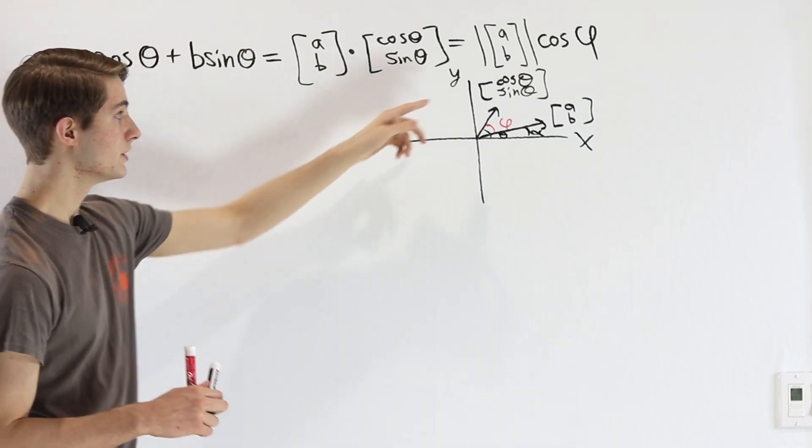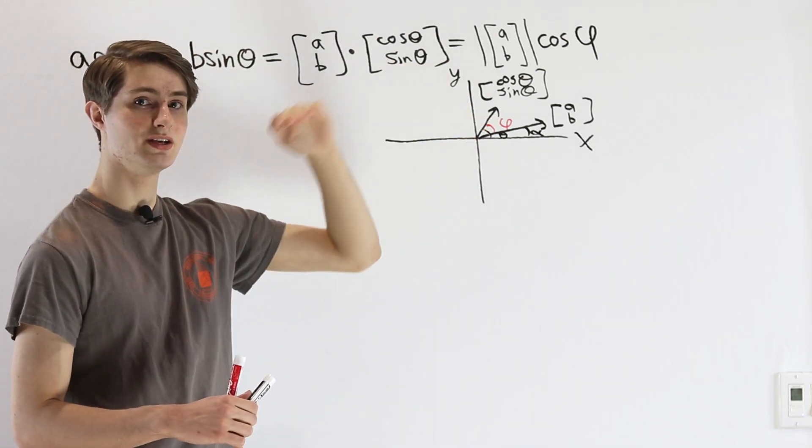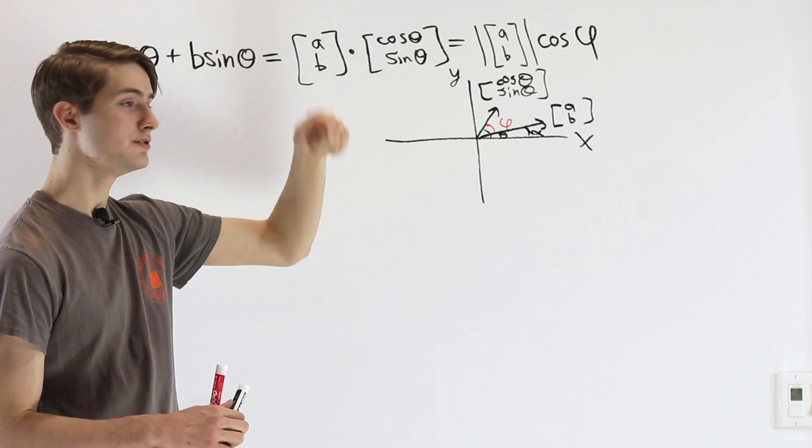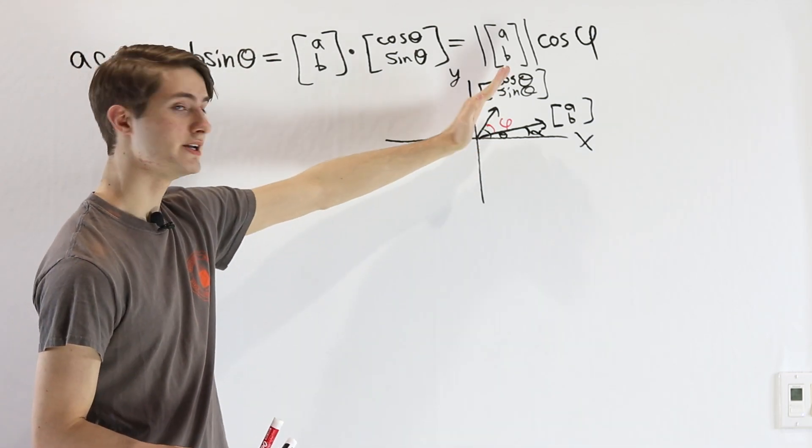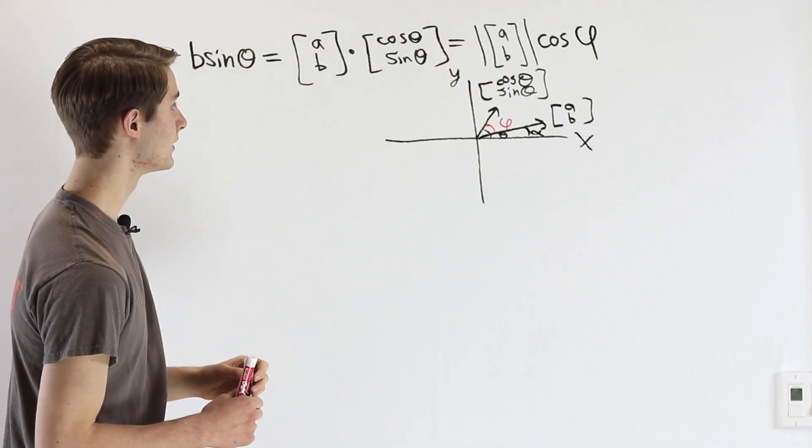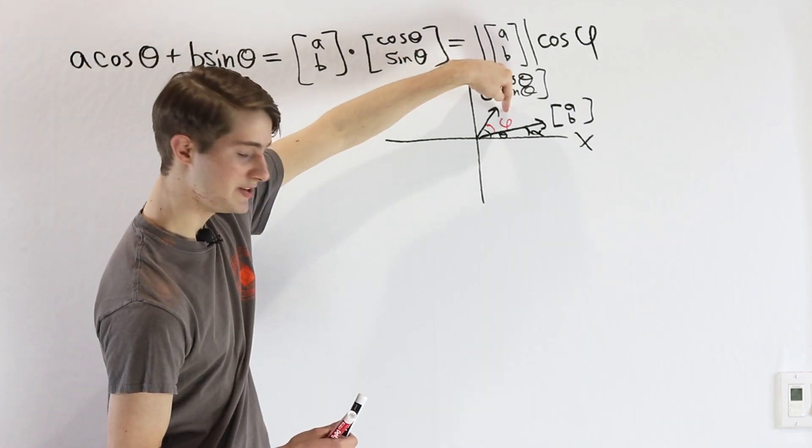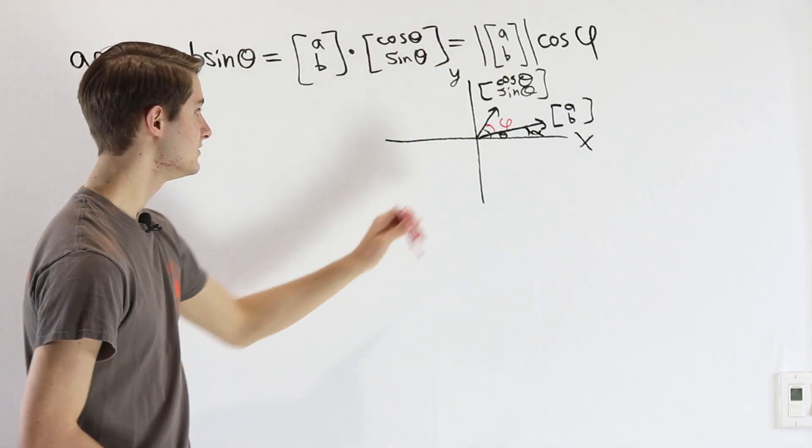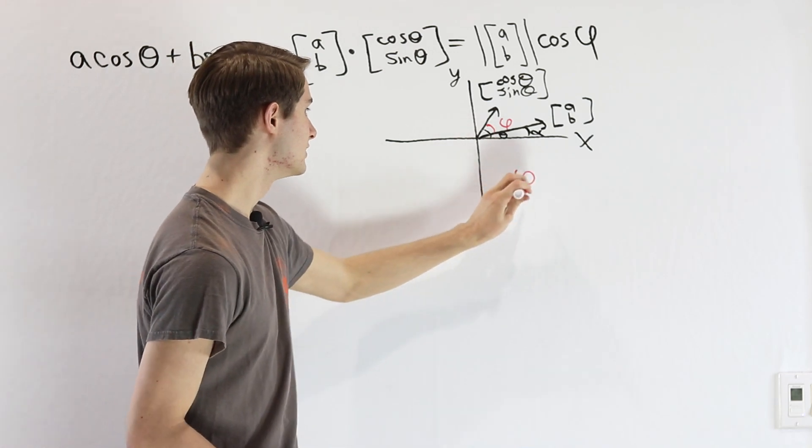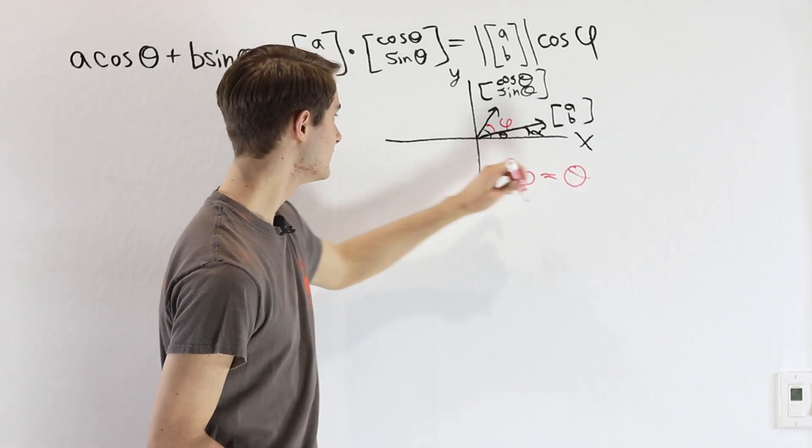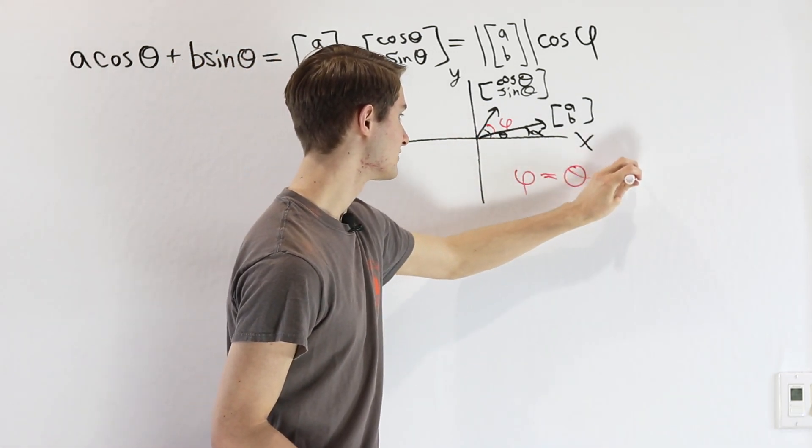Because remember, cos θ and sin θ give us the x and y values for a unit circle when we go angle θ up from the x-axis. Now if we're looking for this angle φ in here, all we have to do is take the difference of these two angles. φ equals θ, our bigger angle here, minus α.